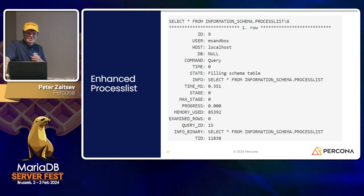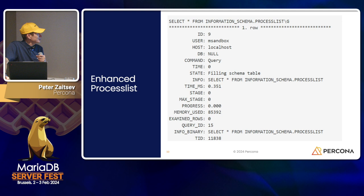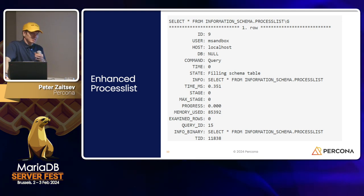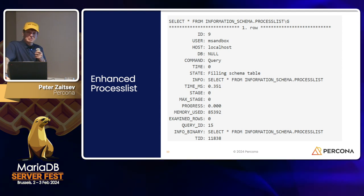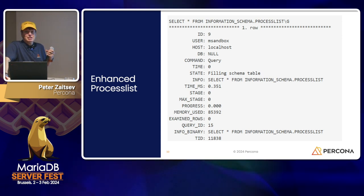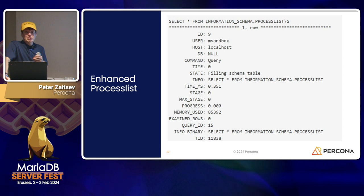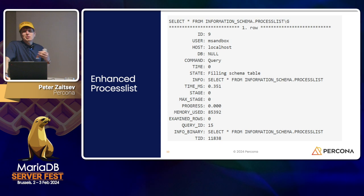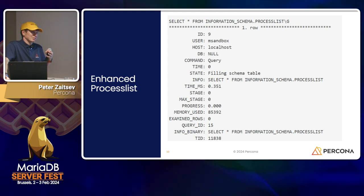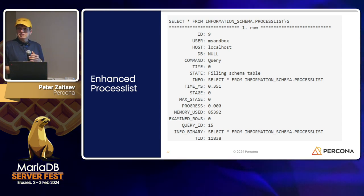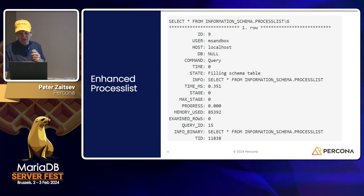Another practical feature is the enhanced process list. In MariaDB's process list there are additional columns with information about progress, memory usage, and other stats. In MySQL you can find a lot of this information, but it is in the Performance Schema — you have to join a bunch of tables, it is not convenient, not fast, and has performance overhead if you want to use it for monitoring.